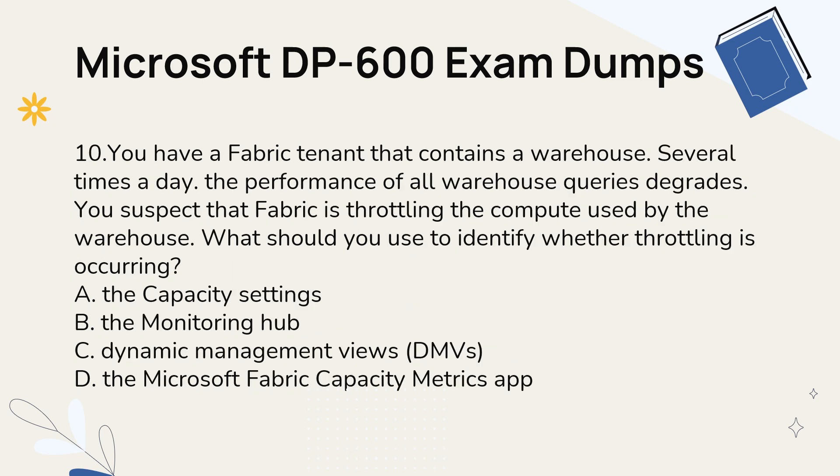Question 10. You have a Fabric tenant that contains a Warehouse. Several times a day, the performance of all Warehouse queries degrades. You suspect that Fabric is throttling the compute used by the Warehouse. What should you use to identify whether throttling is occurring? A. The Capacity Settings. B. The Monitoring Hub. C. Dynamic Management Views (DMVs). D. The Microsoft Fabric Capacity Metrics App.